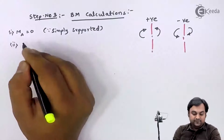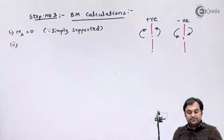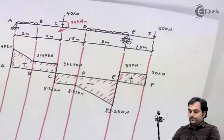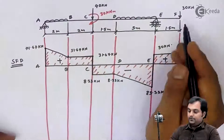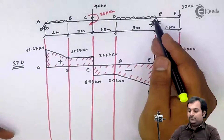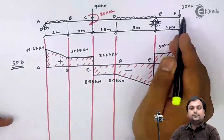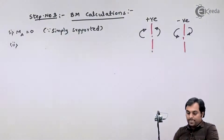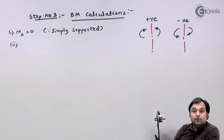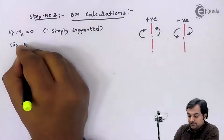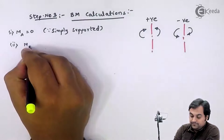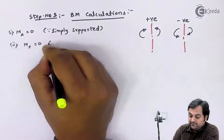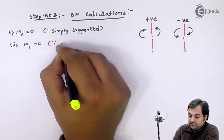Next, at the free end, point F, the bending moment will also be 0 because it is the overhanging portion, and we know that for an overhanging portion the bending moment is 0. So bending moment at F is equal to 0.